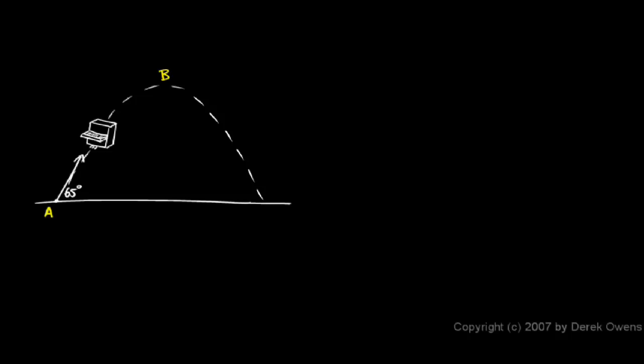In this example, a piano is thrown upward at 33 meters per second at a 65 degree angle. We're told to find three things: the time that it spins in the air, the maximum height that it reaches, and how far away from its starting point that it lands. To facilitate discussing this, I'm going to name some points on its path. I'll call the starting point A, the peak B, and the landing point C.